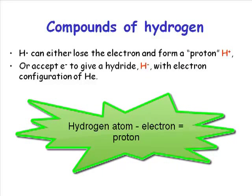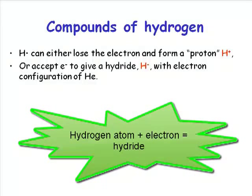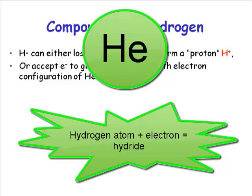Losing the electron gives us a proton, simply an H+ species with no electrons surrounding that proton. The other form of hydrogen chemistry is that it can gain an electron. If hydrogen gains an electron, it now has two electrons in its outer shell, which is a full 1s outer shell giving it the same electron count as a helium atom.